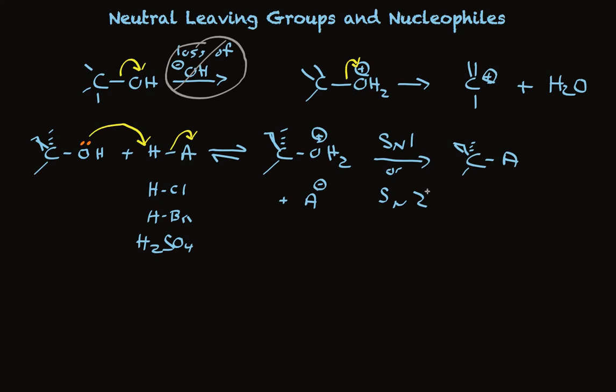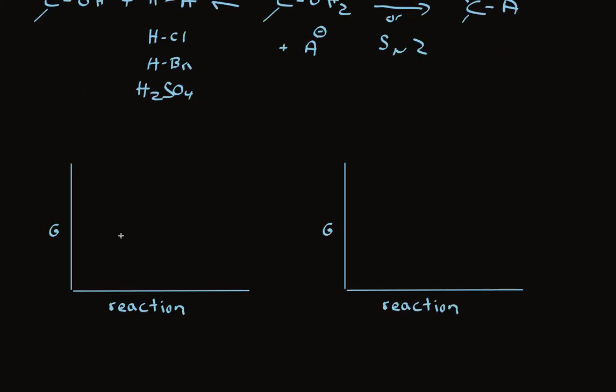In terms of the energy diagrams then, take a look. The normal SN2 reaction looks like this. If an alcohol is a starting material that's protonated by acid, we have another step to begin with. So we have an alcohol, we have a protonated alcohol, and we have a product.